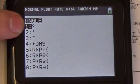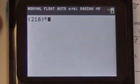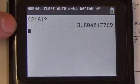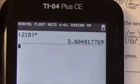The very first option here is the degree symbol. When I choose that, what that does is it tells the calculator that this is a degree. And when I press enter, it converts it automatically into radians, 3.8.